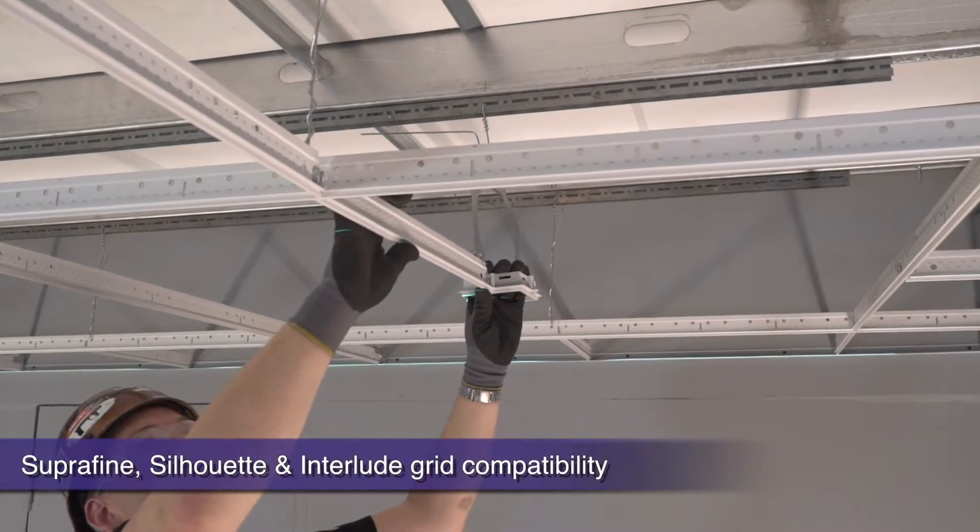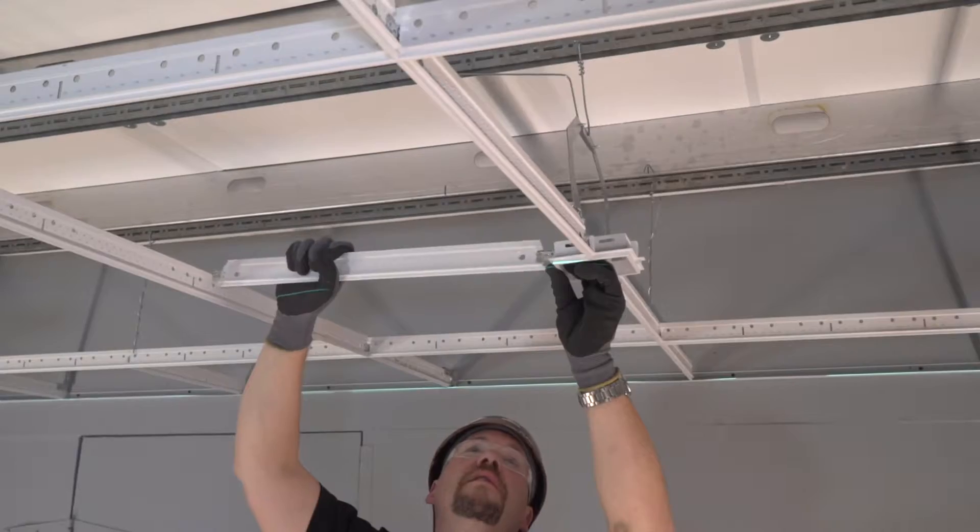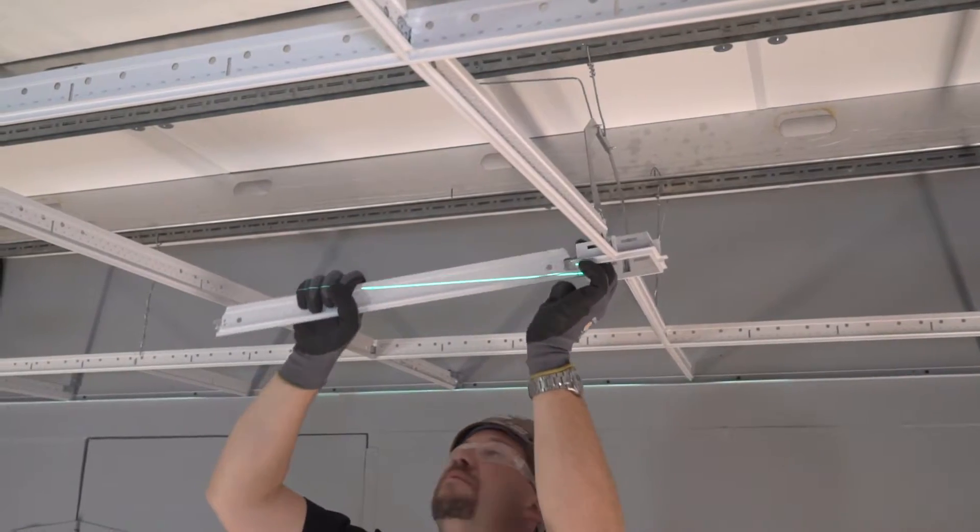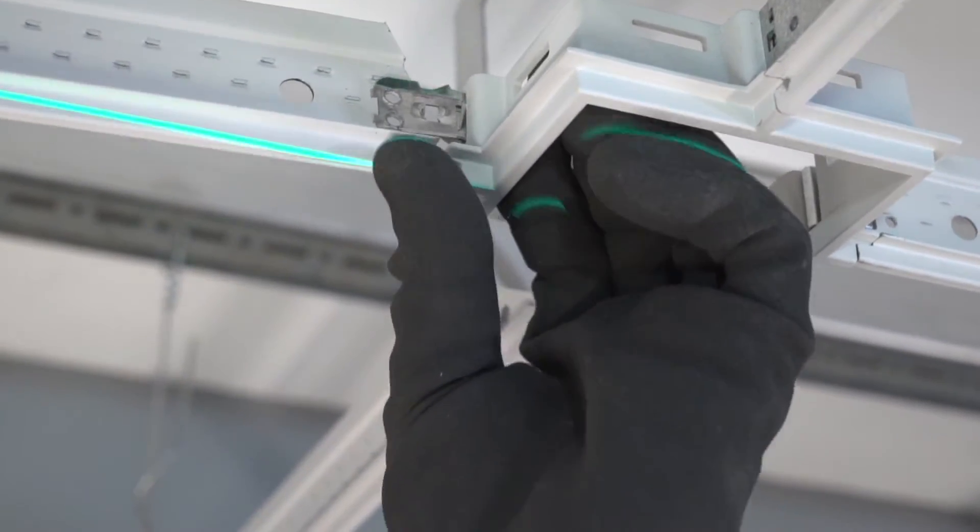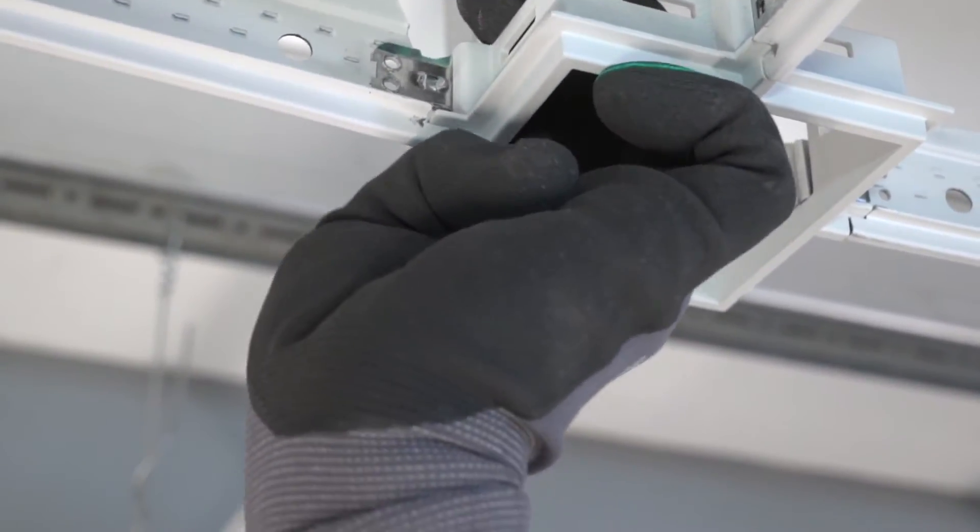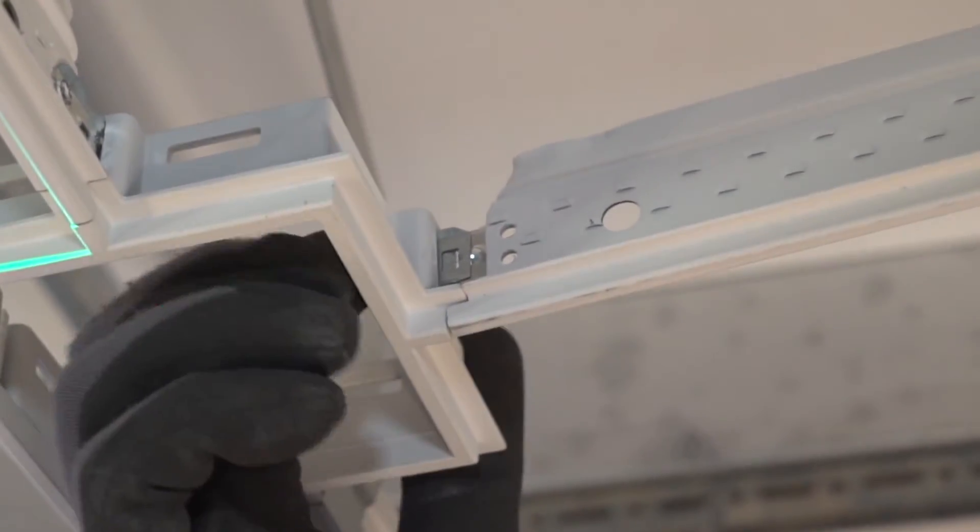You can specify either superfine, silhouette, or interlude grid systems for use in the intersection downlighting assemblies. As you can see, this is a modular, well thought out system that is easy to install and specify. It's even approved for use in seismic DEF installations.